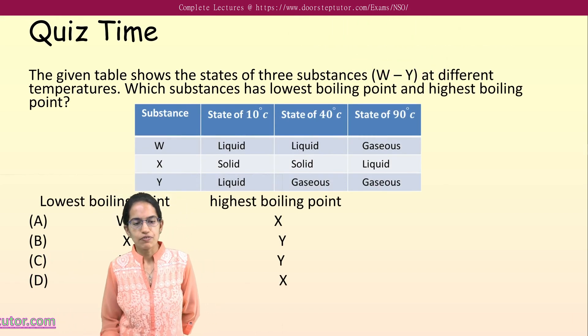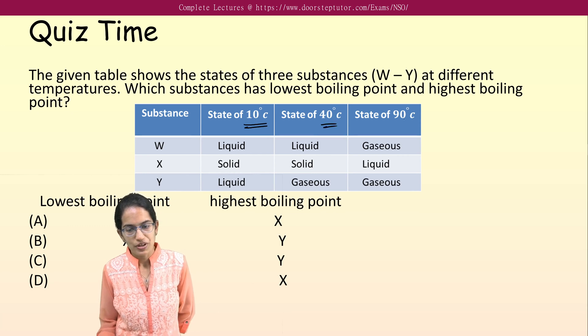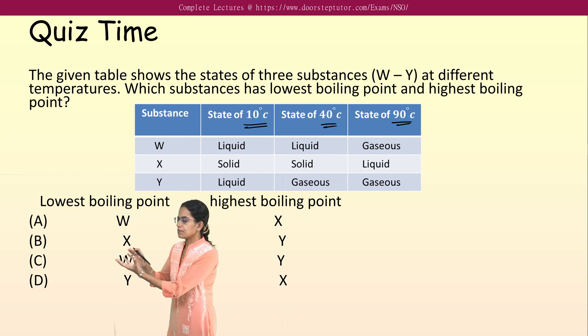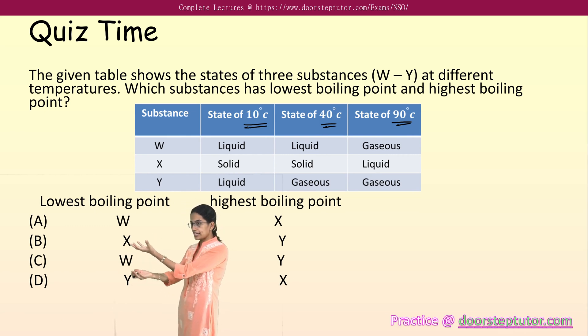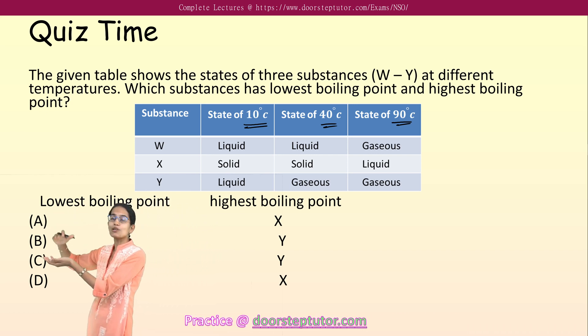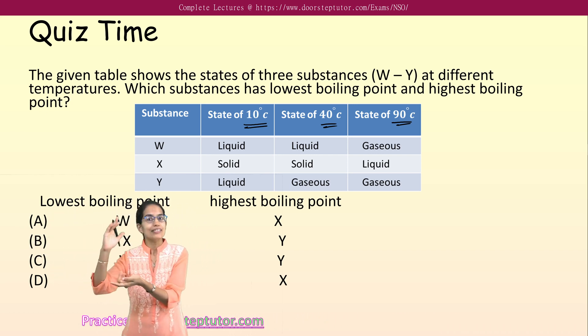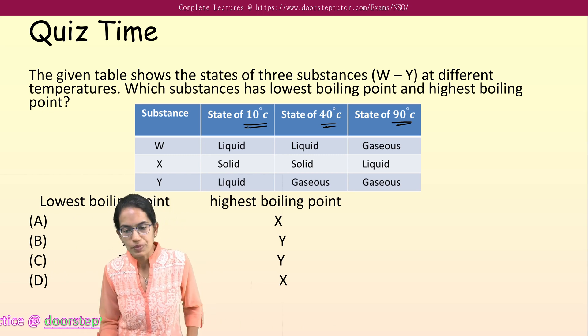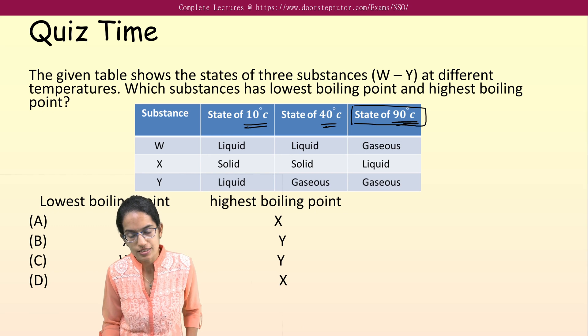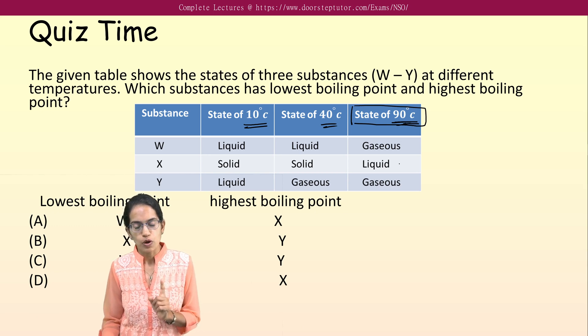Their state given at various temperatures. Very interesting part, understand it carefully. If I am keeping one substance and I keep giving it heat but still it is not changing its state, it is not boiling, that means it has the highest boiling point. That means one which is in liquid state up to 90 degrees Celsius would be the one with the highest boiling point. So here among the three, this is the only one.